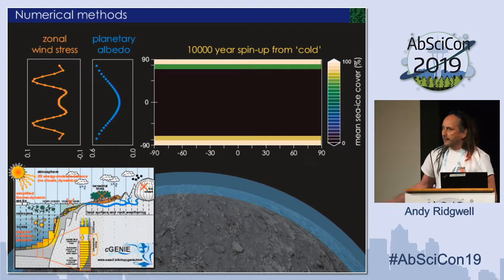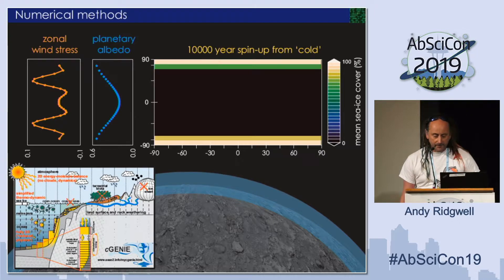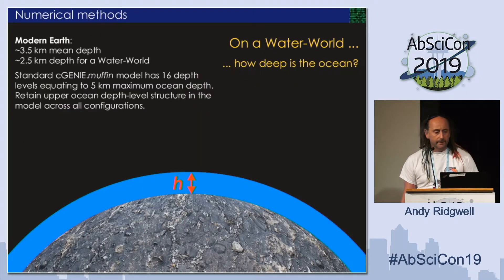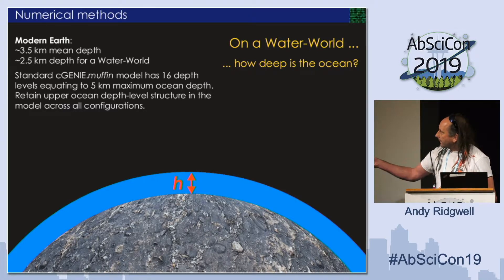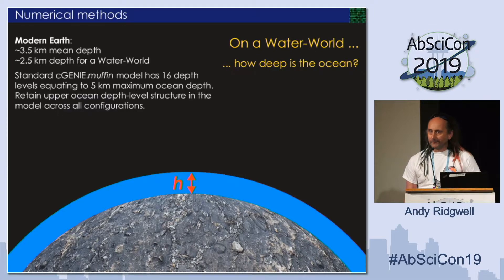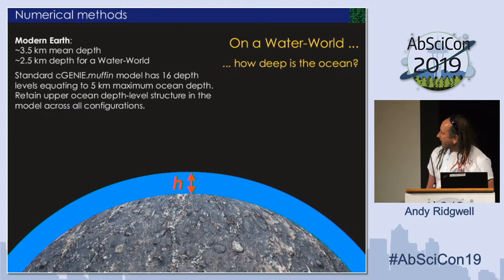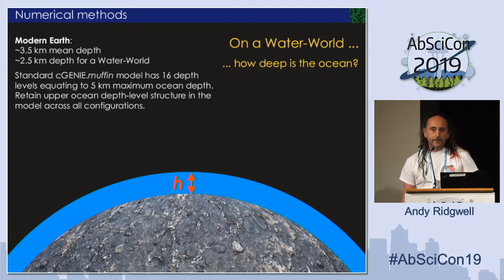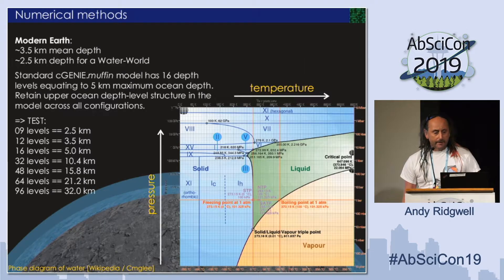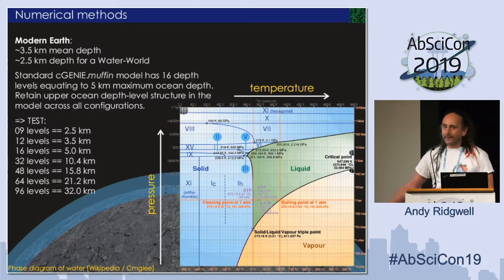With a typical modern solar constant and modern CO2 concentration, there is some sea ice at each pole that spreads out a little bit, but a little bit like the zones today. The mean depth of today's ocean is about 3.5 kilometers. If you take away all the cratons and make a true water world, the average depth would only be about 2.5 kilometers. In the modern model, the maximum depth is 5 kilometers with 16 levels. I'm going to keep the layer structure — not changing the thickness of the surface layer where life lives — and basically just add more and more layers deeper down, testing different assumptions about ocean depth.